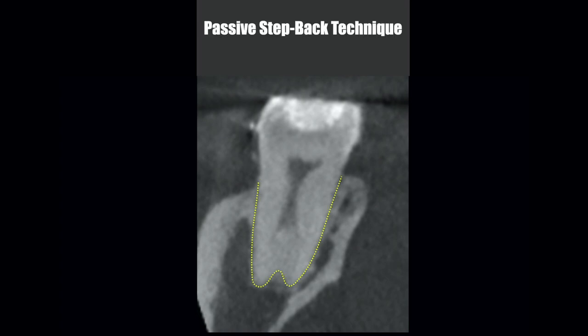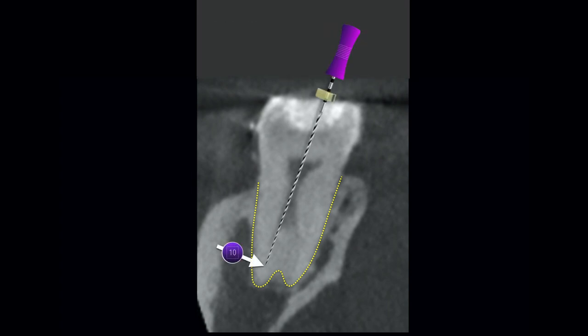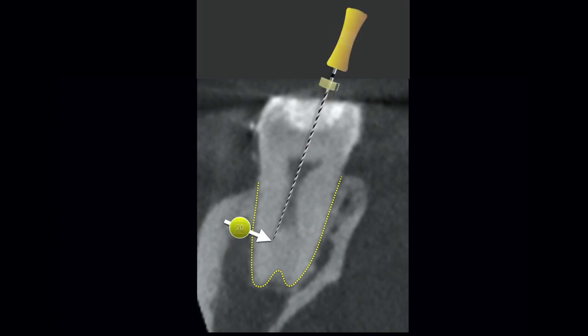I'll passively enlarge these canals by hand using the passive step back technique — a hand filing technique that removes mid-root interferences by using successively larger hand files in sequential order, each larger file advancing shorter than the last. We want to be passive with this technique and use it in the presence of a lot of irrigation solution that gets refreshed frequently. The more aggressive you are, the more at risk you are for creating a ledge. Once you can consistently enter both canals unobstructed, take your engine-driven instruments in and follow your normal shaping and irrigation protocols.